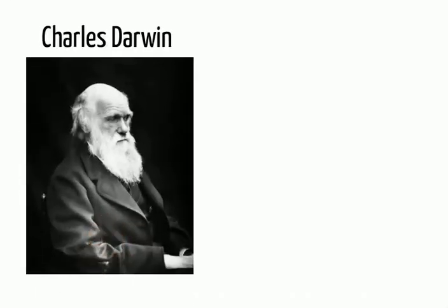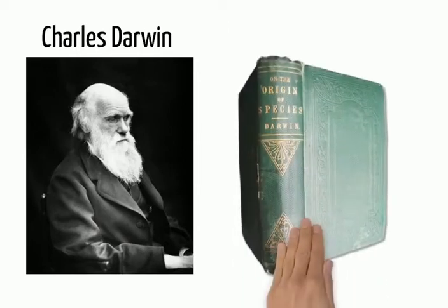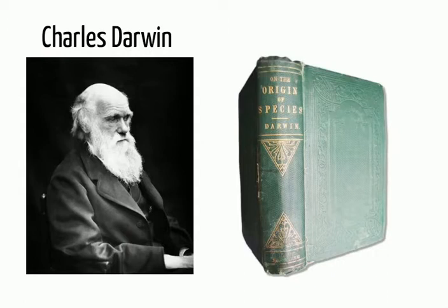In 1859, the English naturalist Charles Darwin published his now seminal work On the Origin of Species, in which he sets out the theory of evolution through natural selection.